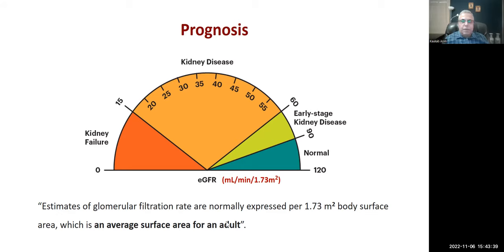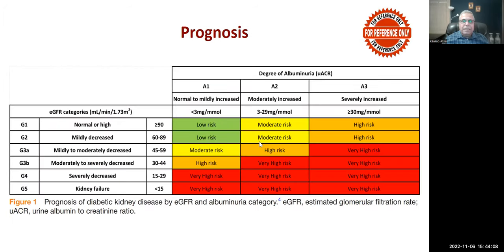Estimates of GFR are normally expressed in ml/min per 1.73 meters squared, which represents the average body surface area of an adult. The relationship between GFR and albumin-creatinine ratio — with categories A1, A2, A3 — shows the risk of CKD progression. As albumin-creatinine ratio increases and GFR decreases, the risk of progression increases. This information is available via online calculators.